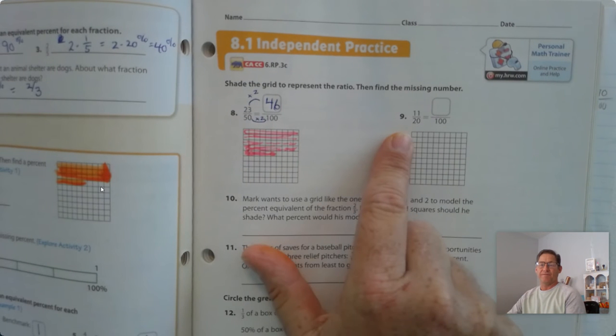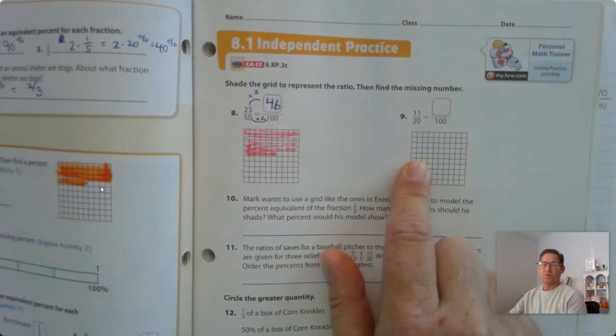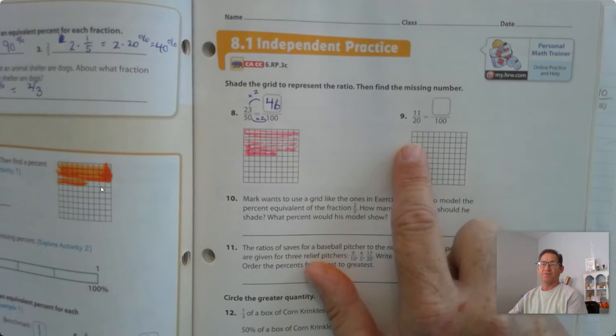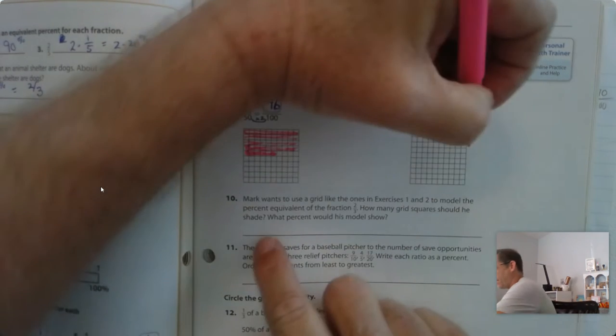11 20ths. So for every 20 squares, we're going to shade 11. Well, there's 5 sets of 20 in that, so I'm going to shade 55.